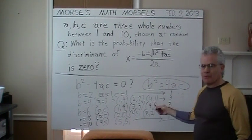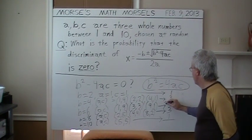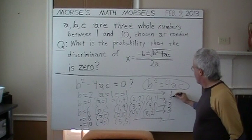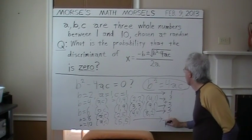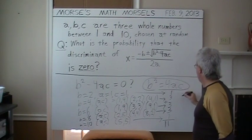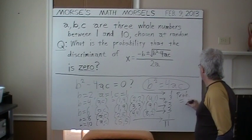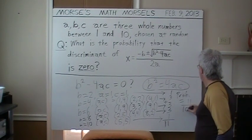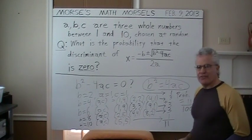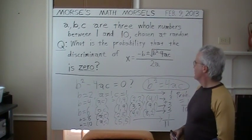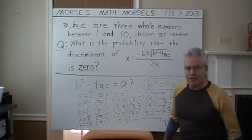We've exhausted the possibilities for the values of A and C. If we add up all these possibilities, 1, 4, 7, 10, 11. Hence, our probability equals 11 over 1,000, which is just over 1%. Thank you for viewing.